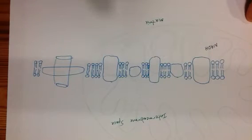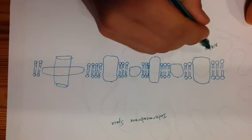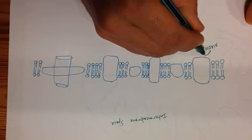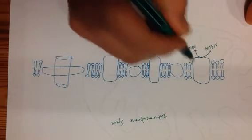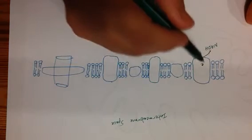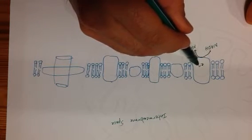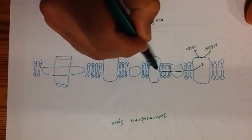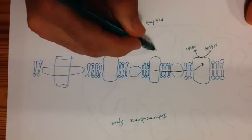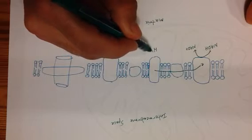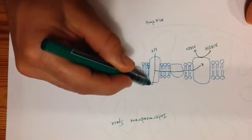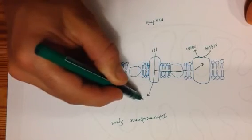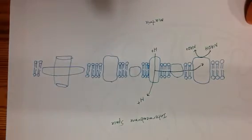So NADH molecule that was created, this could be either from glycolysis or the Krebs cycle, is going to more or less pass the electrons back. Those electrons are then going to move across this electron transport chain. As they move across, they're going to lose their energy, and protons from the matrix are going to more or less use that energy to move to the inter membrane space.